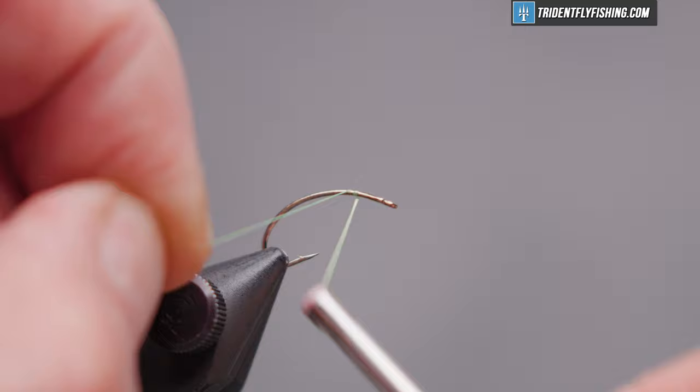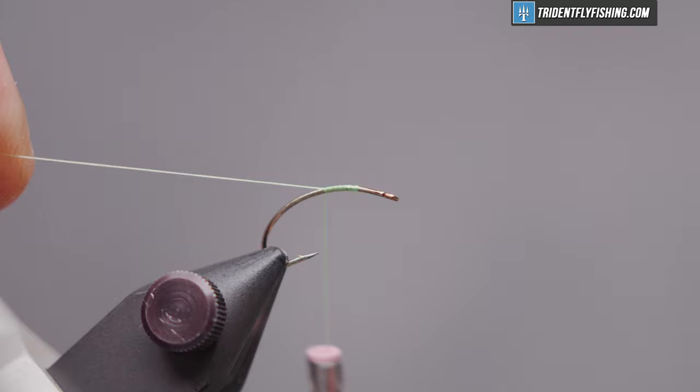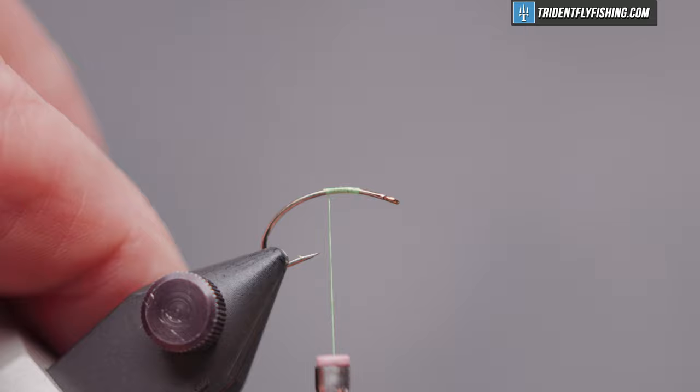And we'll get our tie started. A couple of eye links behind the hook eye. And we're going to wrap back past the bend of the hook. This is going to form the egg sack.